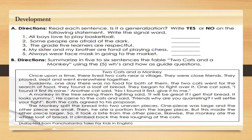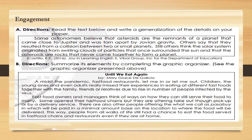Let's move on now to development activity. Development Activity Letter A directions: Read each sentence. Is it a generalization? Write yes or no on the following statement, and write the signal word. For Development Activity Letter B directions: Summarize in five to six sentences the fable 'Two Cats and the Monkey' using the 5 WH and how questions as guide questions. For engagement activities, Letter A directions: Read the text below and write a generalization of the details on your paper. Letter B directions: Summarize its elements by completing the graphic organizer.